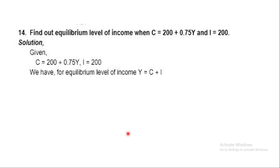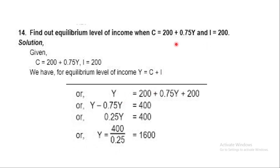Question 14: Find the equilibrium level of income. Y = C + I. With C = 0.75Y, at equilibrium Y = C + I. So Y minus 0.75Y = 0.25Y. We solve for Y to get the equilibrium level of income as the required answer.